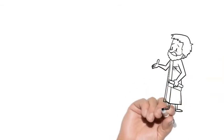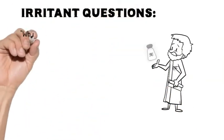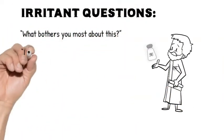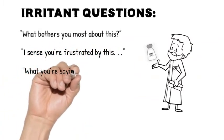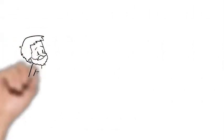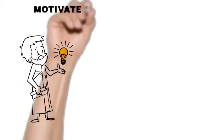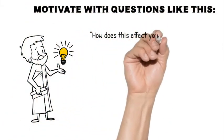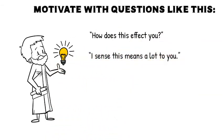Socratic questioner uses irritant questions: What bothers you most about this? I sense you're frustrated by this. What you're saying is that if this trend continues, you could lose it all? Use the Socratic method to motivate with questions like: How does this affect you? I sense this means a lot to you. Why is this important to you?